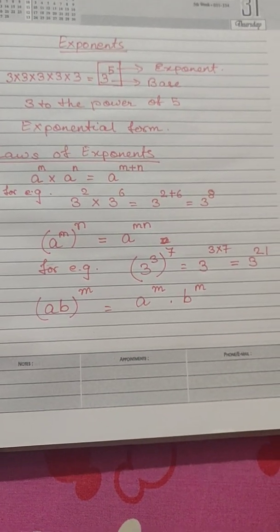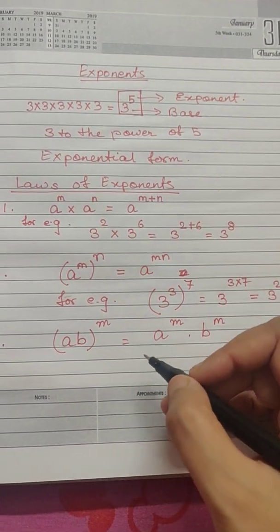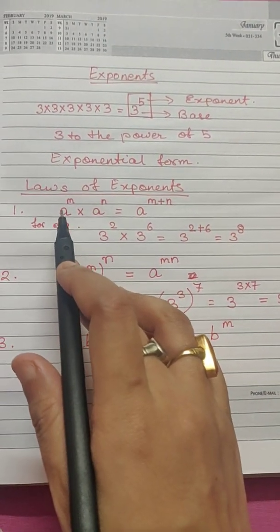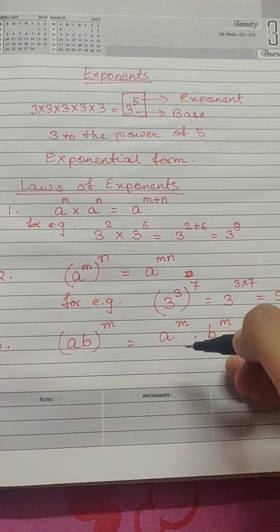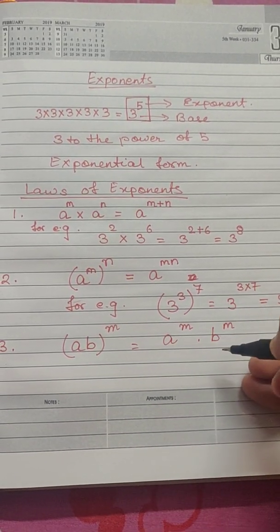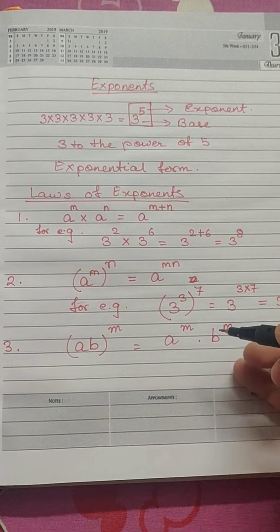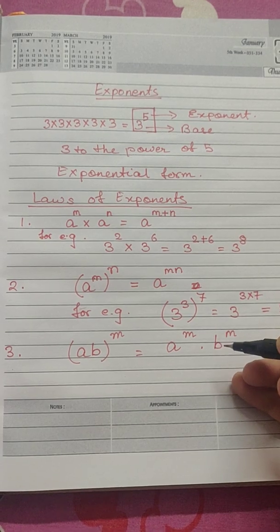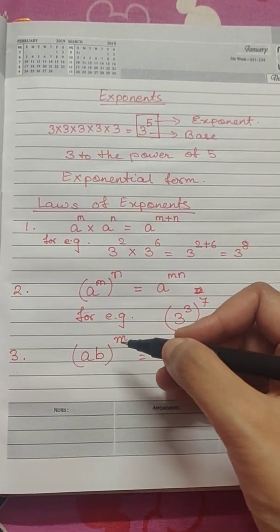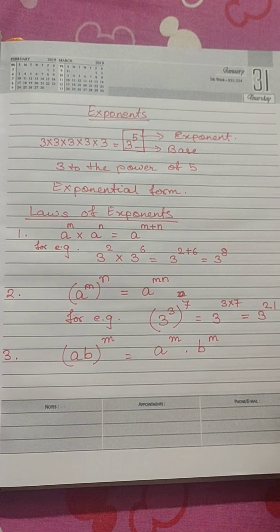This means that if in the first law we talked about two same bases but two different exponents, here we will be talking about two different bases but same exponents. In this case, we multiply the bases and the exponent we take it as common. As simple as that.